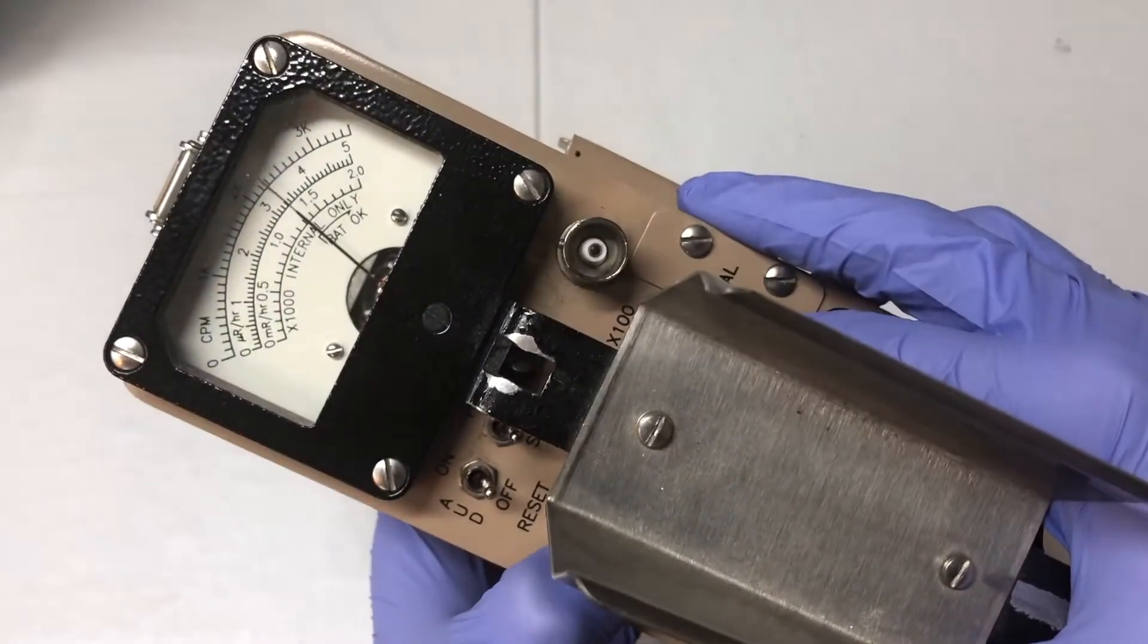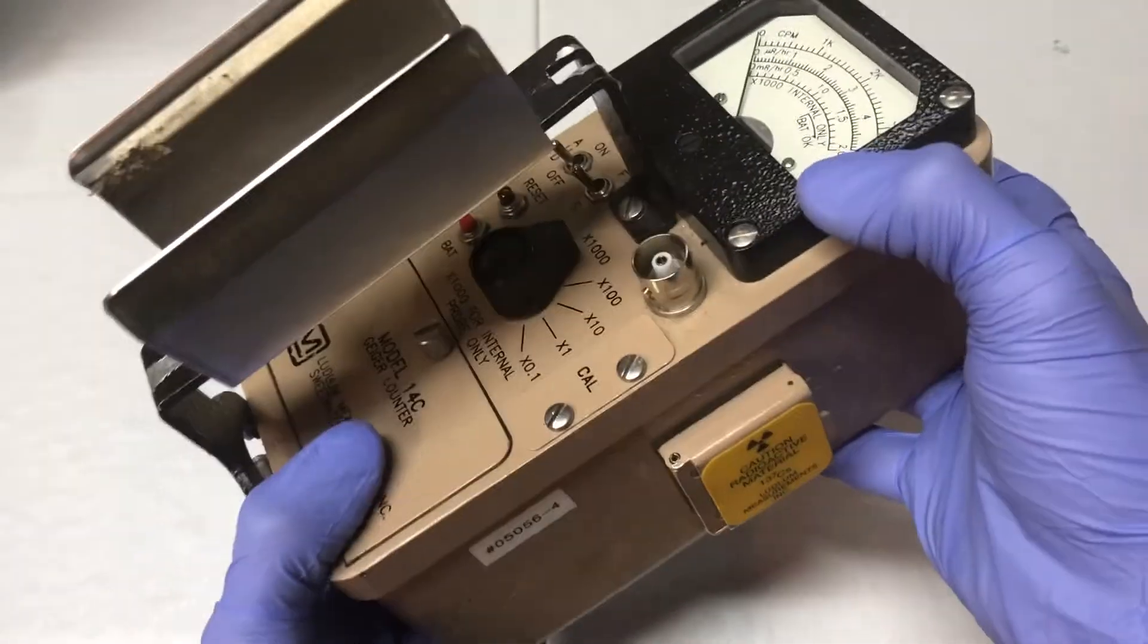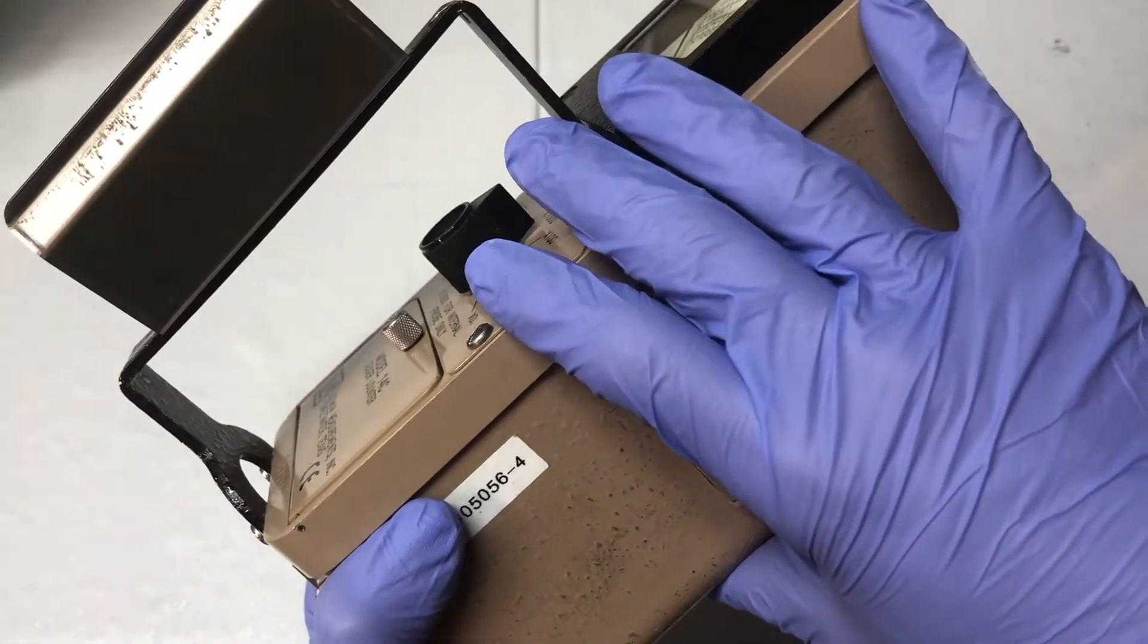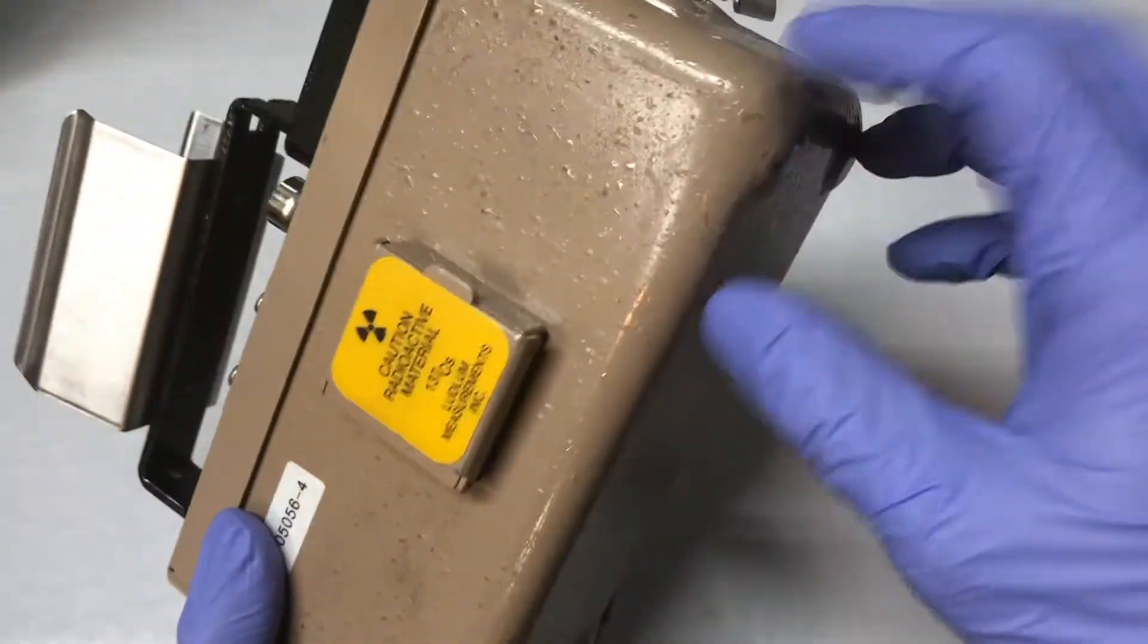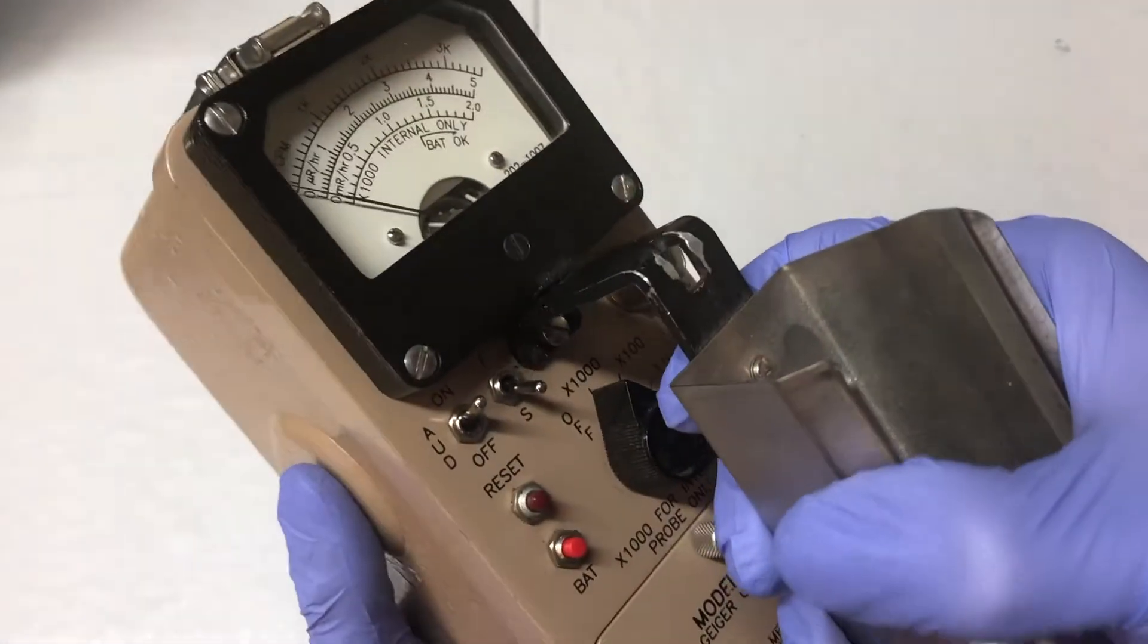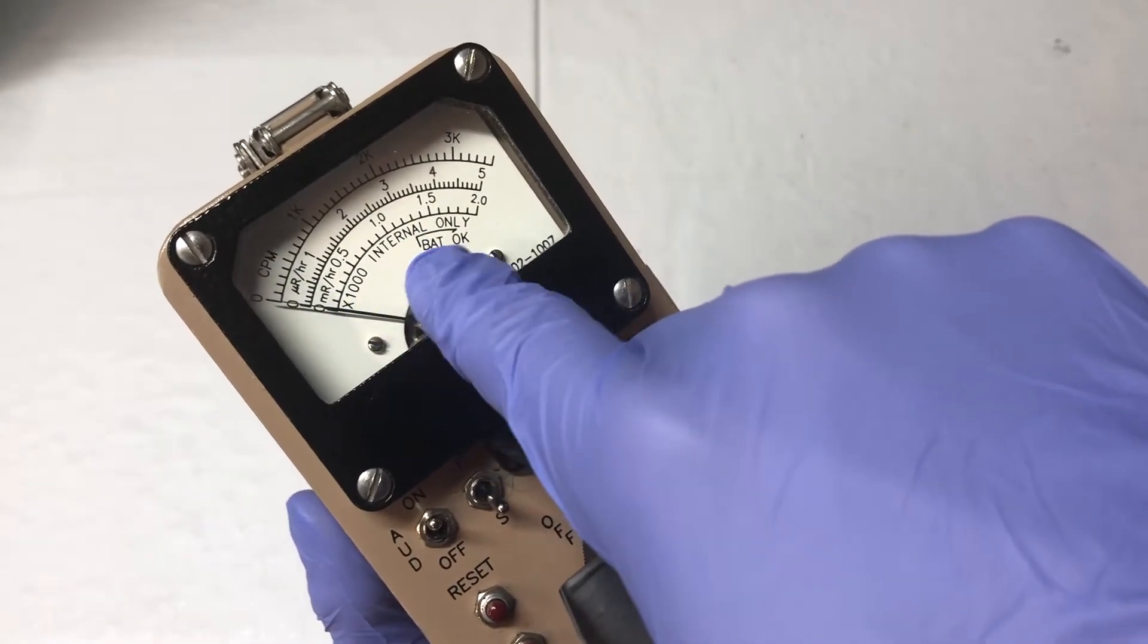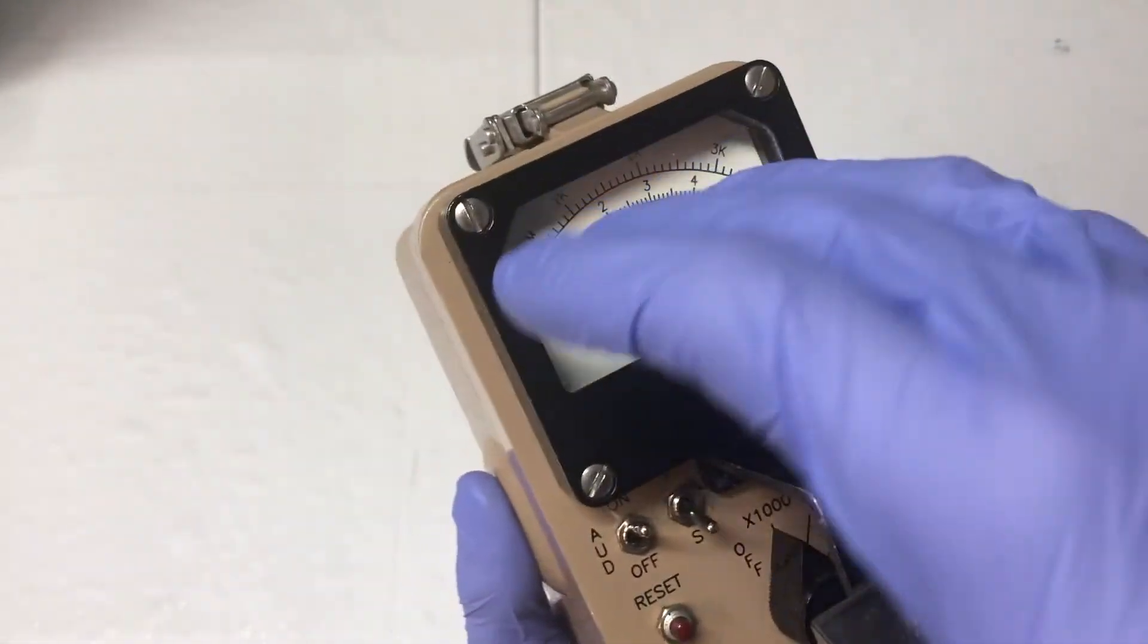Now what's interesting about the Ludlum 14C is that it can have an external scintillator probe or gamma radiation probe and a GM detector, but it also has an internal Geiger-Muller tube. When set to 1000, it reads internal, and this is the first line which reads in milliroentgens. For the Type-C connector which connects to the external detector, it can read in counts per minute.